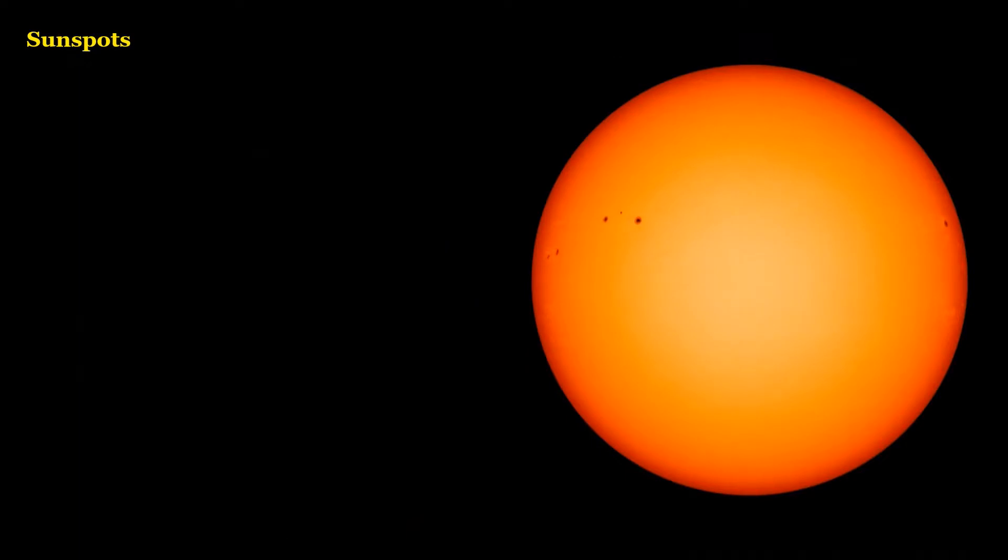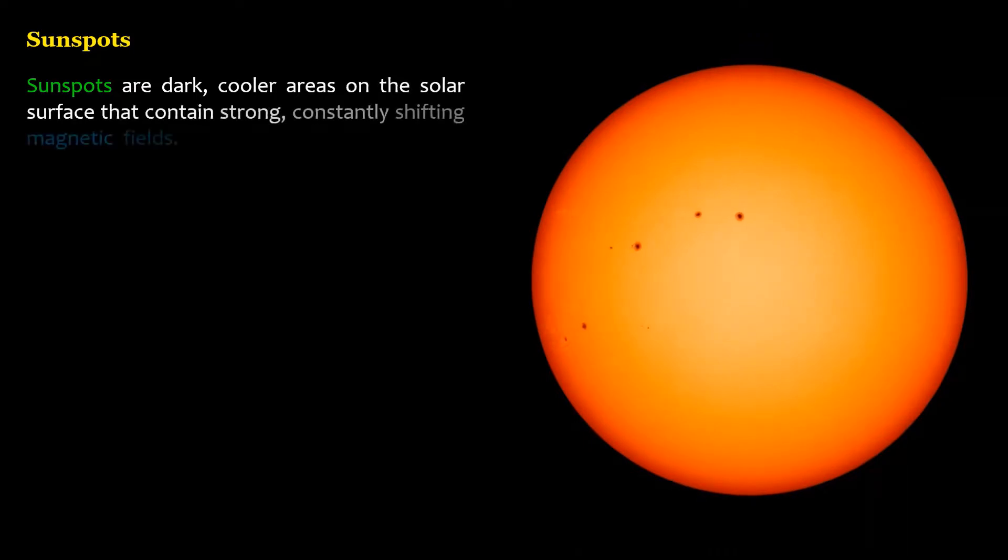Sunspots are dark, cooler areas on the solar surface that contain strong, constantly shifting magnetic fields. A moderate-sized sunspot is many times larger than the size of the Earth.